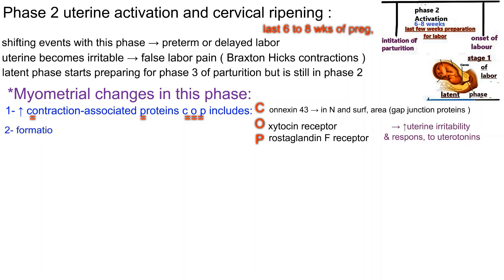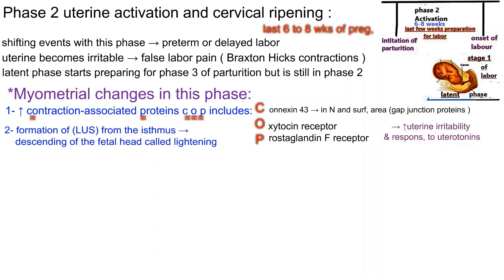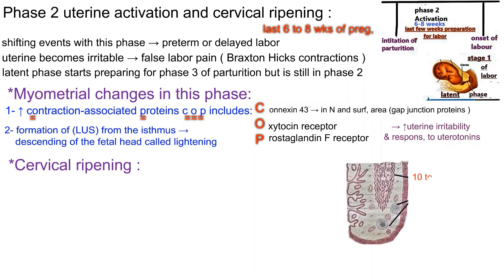Formation of the lower uterine segment from the isthmus, resulting in descent of the fetal head, called lightening. Cervical ripening: the cervix is made up of only 10 to 15 percent smooth muscle, with the remainder being connective tissue.